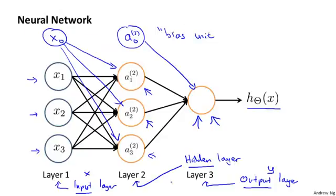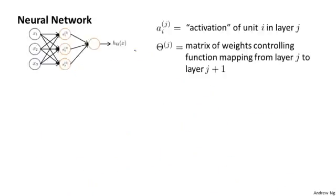So I want to be really clear about what this neural network is doing. Let's step through the computational steps that are embodied by this diagram. To explain the specific computations represented by our neural network, here's a little bit more notation. I'm going to use a superscript j subscript i to denote the activation of neuron i or of unit i in layer j.